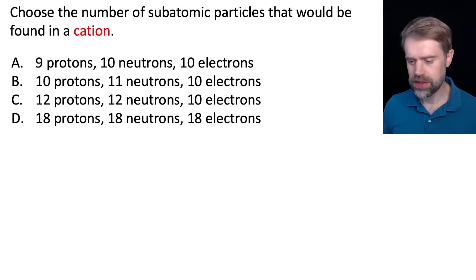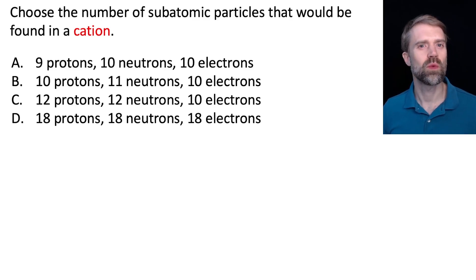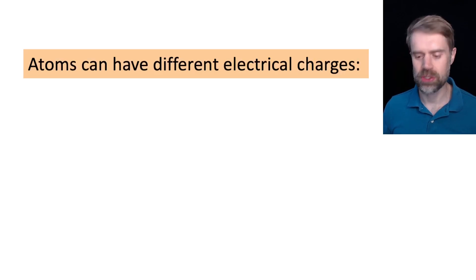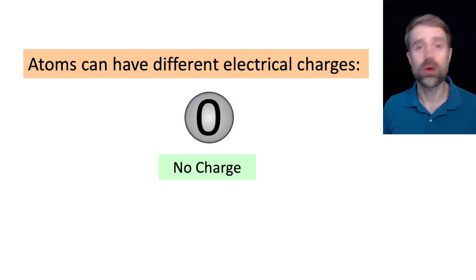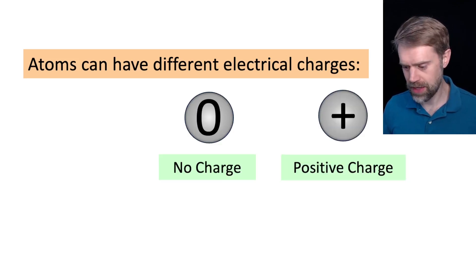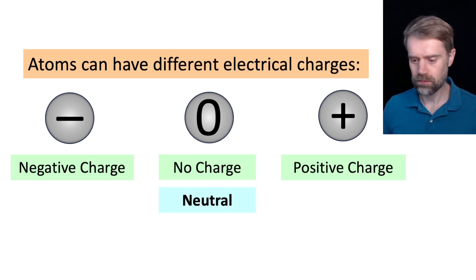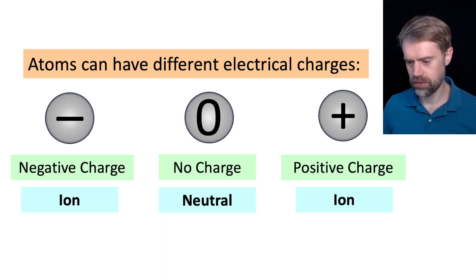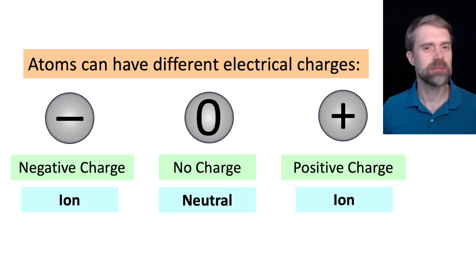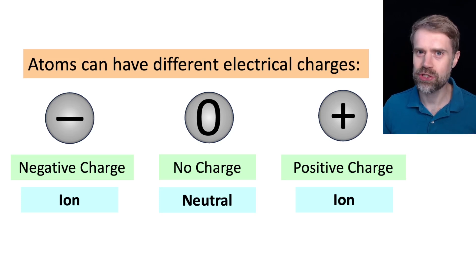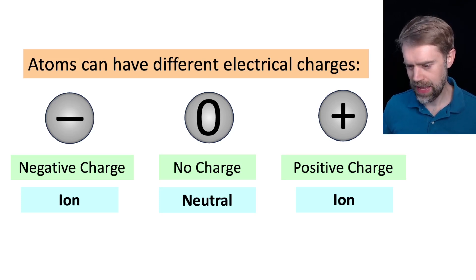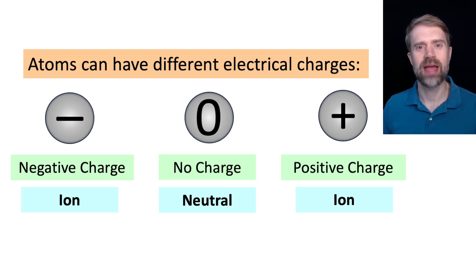This question is asking about a cation — what's that? Let's talk about some background information. Atoms can have different electrical charges. Some atoms have no charge, or zero charge. Some atoms have a positive charge, and some atoms have a negative charge. There are some names you should know for these different kinds of atoms. If something has no charge or zero charge, we say it's neutral. If an atom has a charge, you can call it an ion — it doesn't matter if it's a positive charge or a negative charge.